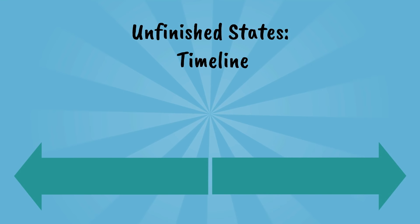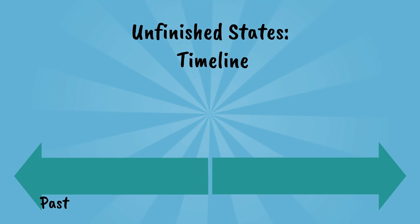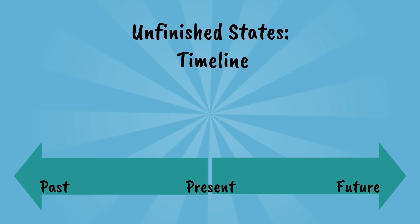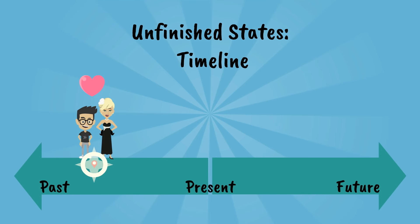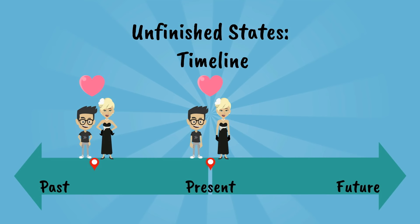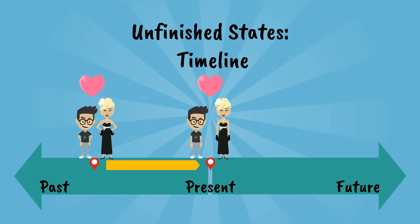Let's take a look at our timeline again to understand this better. On our timeline we have the past, present, and future. The boy met the girl at a certain point in the past, and they still know each other in the present — during their date at the restaurant. They have known each other for two weeks, which means they met two weeks ago.